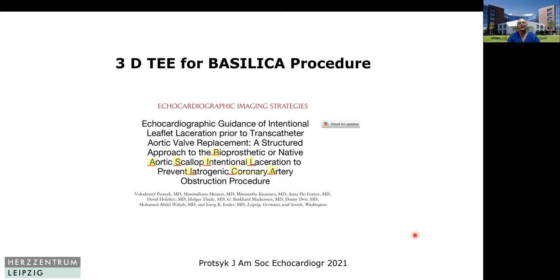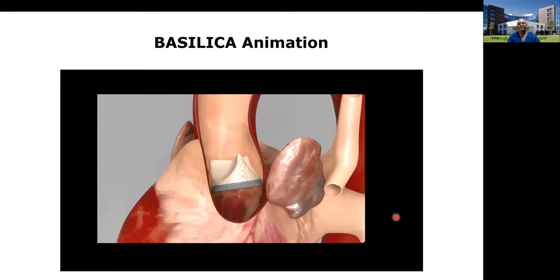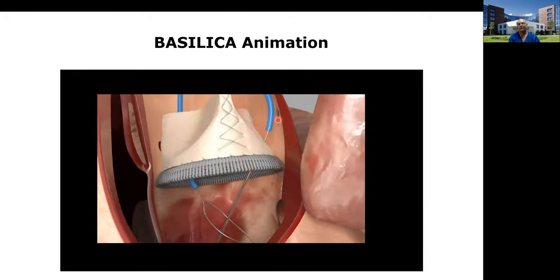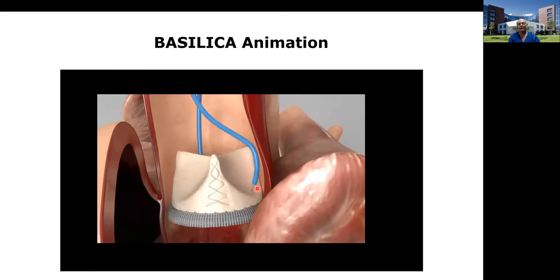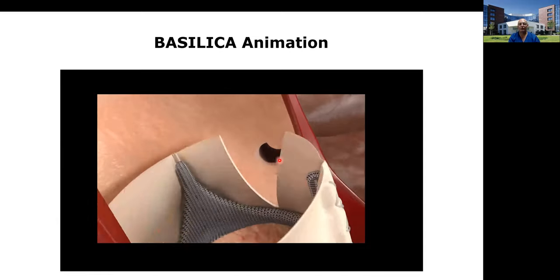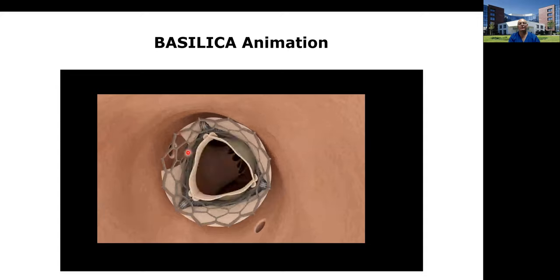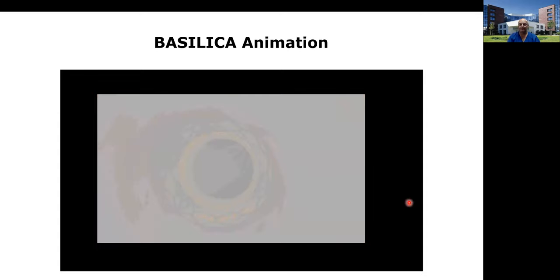Where you need general anesthesia and where 3D TEE — especially the X-plane mode — is really crucial, is during the Basilica procedure: bioprosthetic or native aortic scallop intentional laceration to prevent iatrogenic coronary artery obstruction. This was published this year by one of my senior consultants. In the Basilica animation, in cases where you fear that during TAVR the coronary ostium gets obstructed, you use a catheter in the beating heart to slice the leaflet so that you have a V-form directed toward the left coronary ostium, eliminating the risk of obstruction after TAVR implantation.